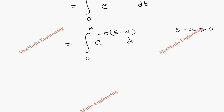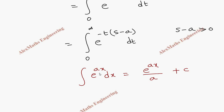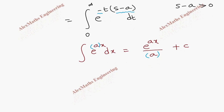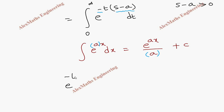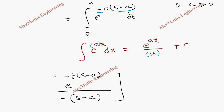We integrate this term using the basic integration formula: the integral of e^(ax) dx equals e^(ax)/a plus c. We divide by the coefficient of x, which here is −(s − a). So on integrating we get e^(−t(s−a)) divided by −(s − a).